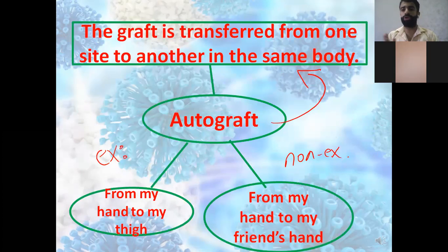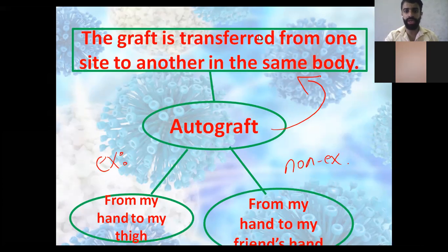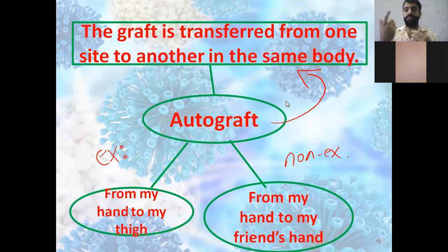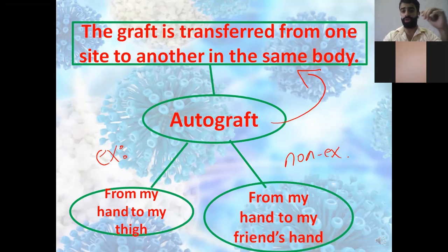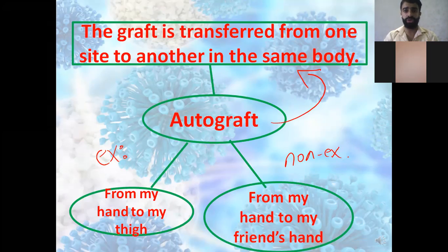The first type is the autograft. An autograft is a graft transferred from one side in the same body to another — for example, from my thigh to my face, or from my hand to my thigh. Autograft occurs within the same body.